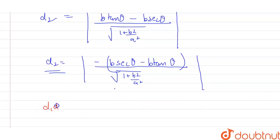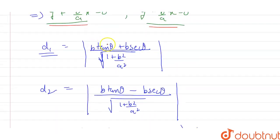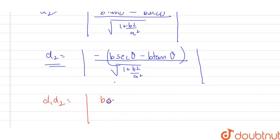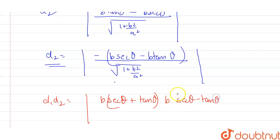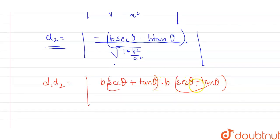Now the question asks for the product D1 × D2. Multiplying these two terms — and the result will be in modulus — the numerator becomes b(sec θ + tan θ) × b(sec θ - tan θ), which I can factor as b² × (sec θ + tan θ)(sec θ - tan θ). This uses the identity (a + b)(a - b) = a² - b², giving us sec²θ - tan²θ in the numerator.